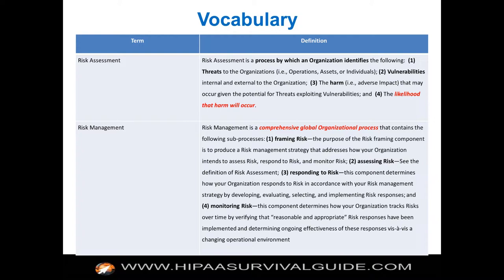Risk management — the second implementation specification for the first standard — is a comprehensive, global organizational process: you frame the risk, assess the risk, respond to the risk, and monitor the risk. Risk management kind of swallows the entirety of the security rule because assessing risk is embedded within it. The recursive nature of risk assessment within risk management is why a risk assessment is not a one-time thing — these steps are performed over and over again.